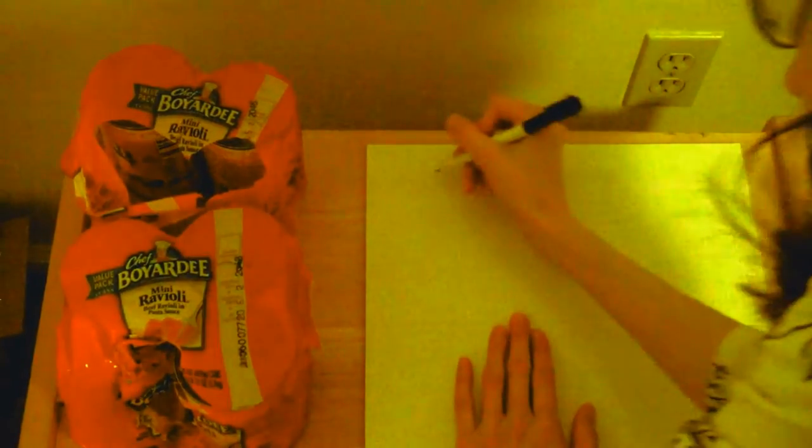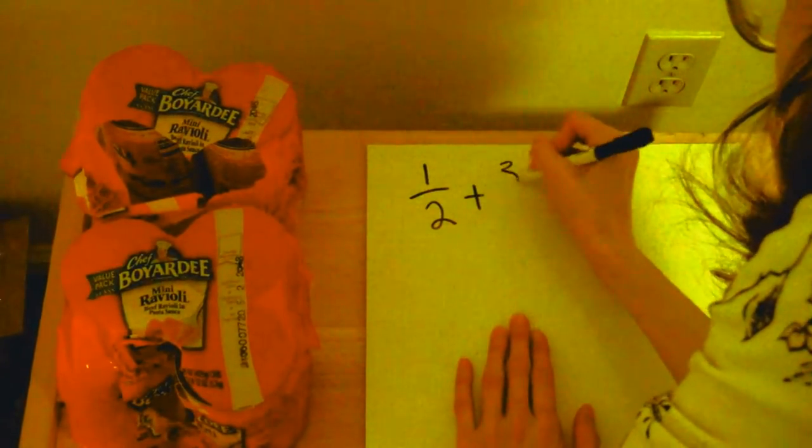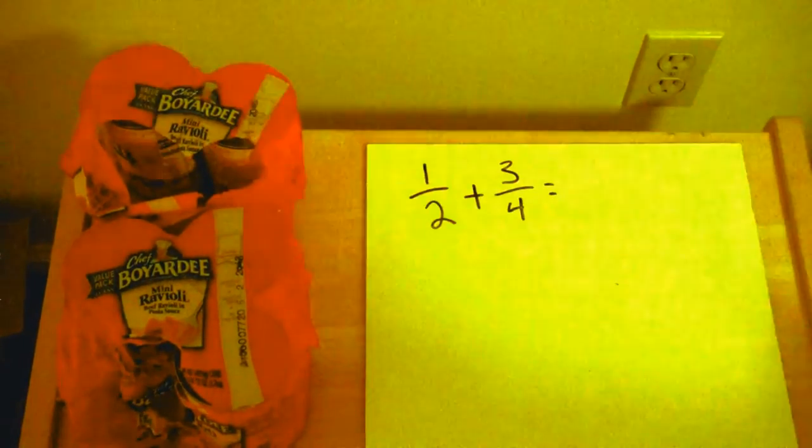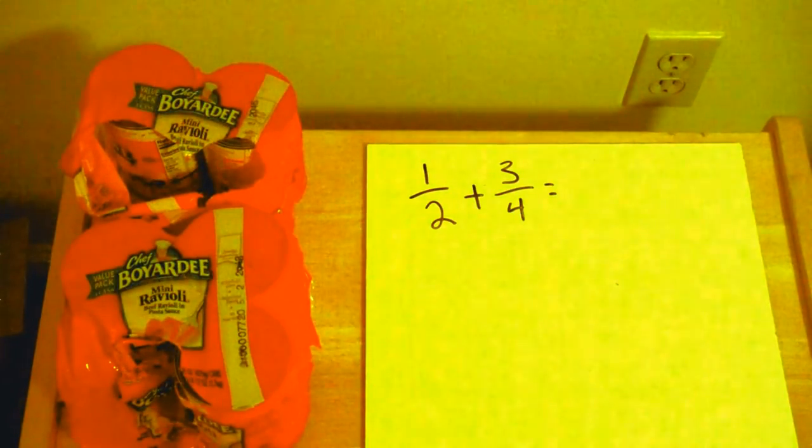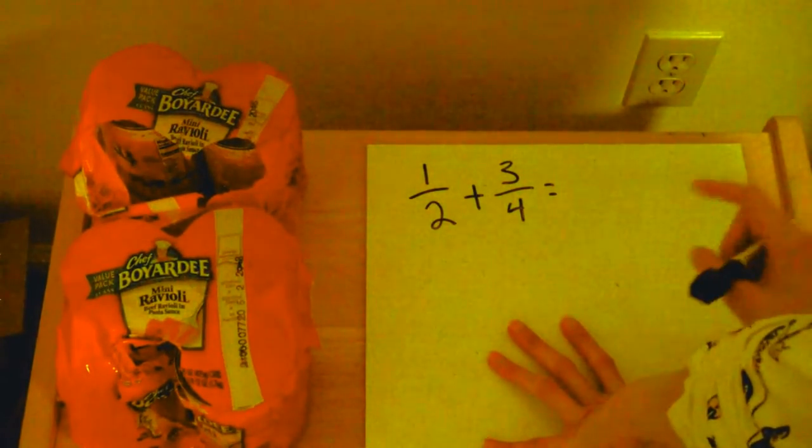Here we have another ravioli problem. I've eaten another can of ravioli. So now I have a half of a pack of ravioli and three-fourths of a pack of ravioli. How much ravioli do I have left? Well, it's important to go ahead and turn our fractions into equivalent fractions so they have common denominators and figure out which way it makes sense to do that.